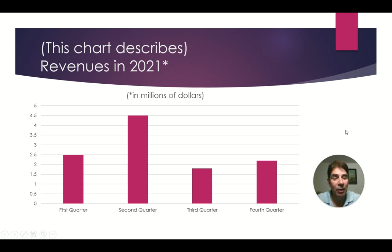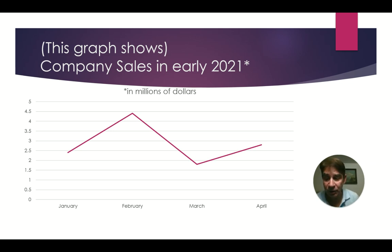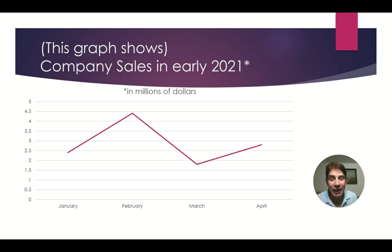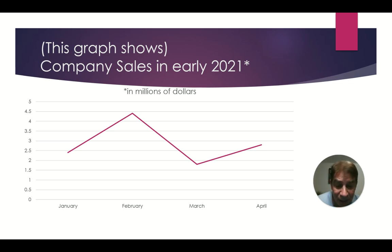Let's look at another example with a line graph. This graph shows company sales in early 2021, again in millions of dollars. Sales started at $2.4 million in January. They increased sharply to $4.4 million in February. Then they dropped dramatically to $1.8 million in March. Then they rose slightly to $2.8 million in April.